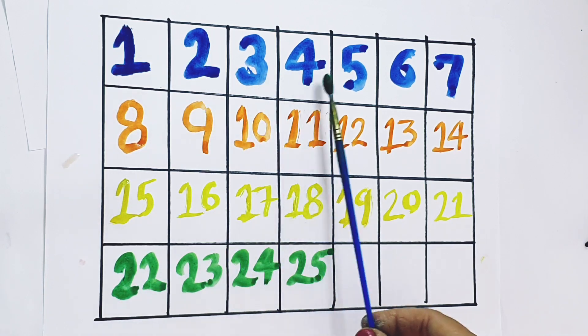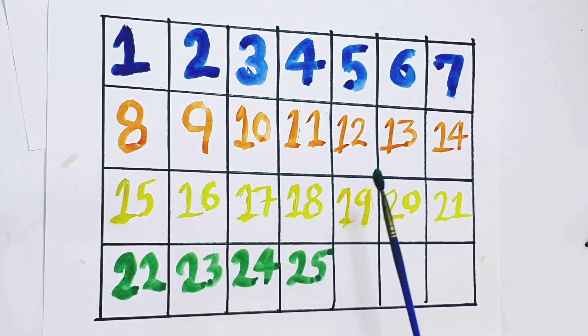1, 2, 3, 4, 5, 6, 7, 8, 9, 10, 11, 12, 13, 14, 15, 16, 17, 18, 19, 20, 21, 22, 23, 24, 25.